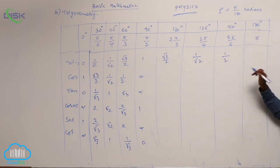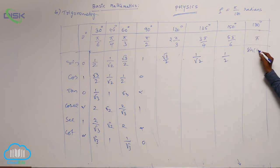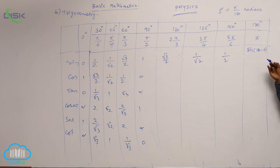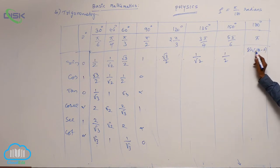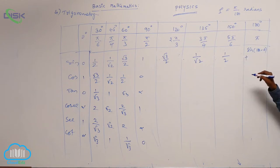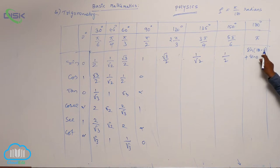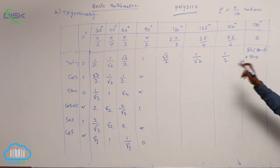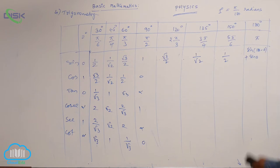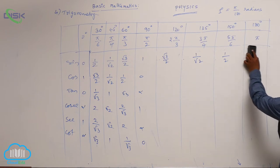For sin 180, writing it as 180 minus 0, it is in the second quadrant so sin is positive. Sin(180 minus 0) gives sin 0, and sin 0 is 0. So sin 180 equals 0.